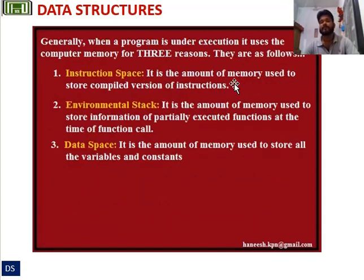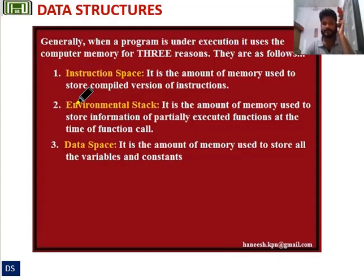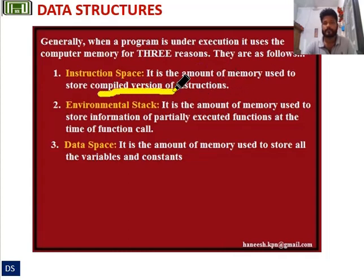Generally, when a program is under execution, it uses computer memory for three reasons: instruction space, environmental stack space, and data space. Instruction space is the amount of memory used to store the compiled version of instructions. Environmental stack space is the amount of memory used to store information of partially executed functions at the time of a function call.